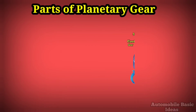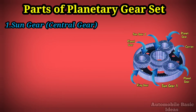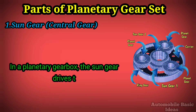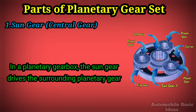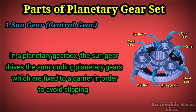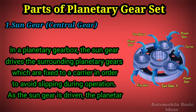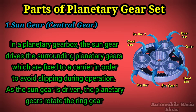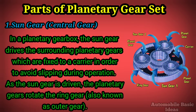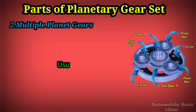Parts of a planetary gear set. One: Sun gear — the central gear. In a planetary gearbox, the sun gear drives the surrounding planetary gears, which are fixed to a carrier in order to avoid slipping during operation. As the sun gear is driven, the planetary gears rotate the ring gear, also known as the outer gear.